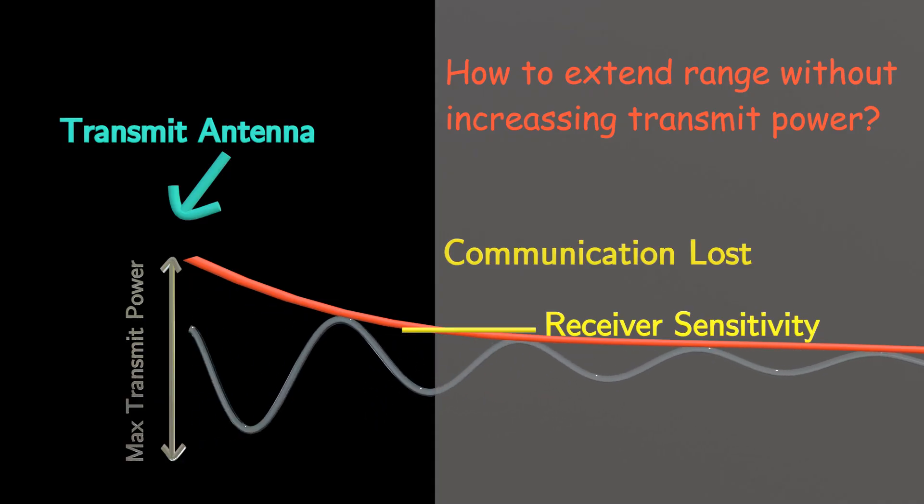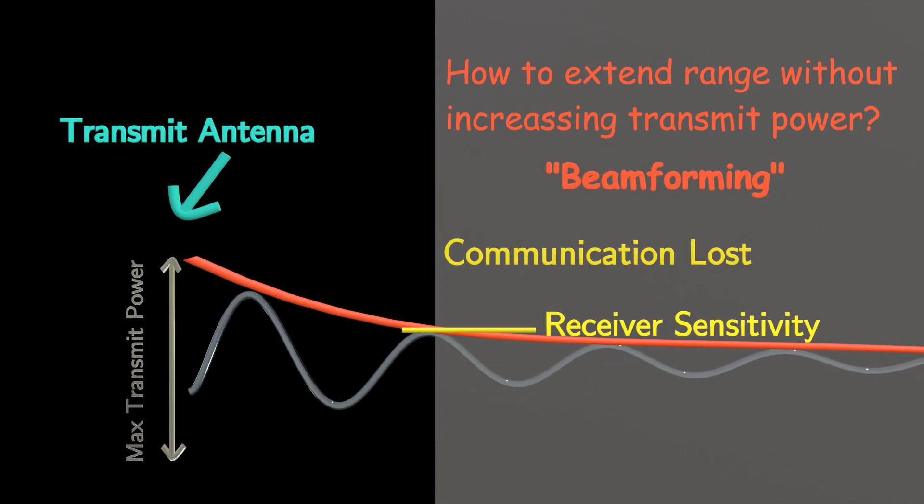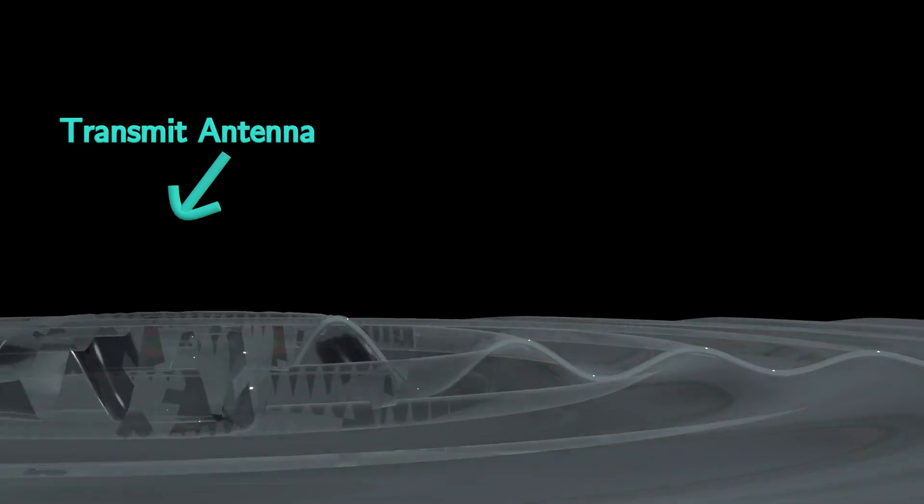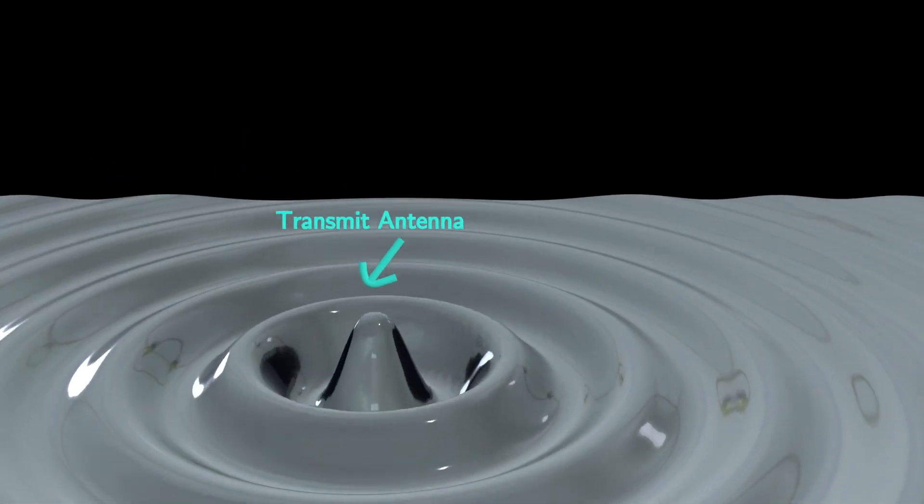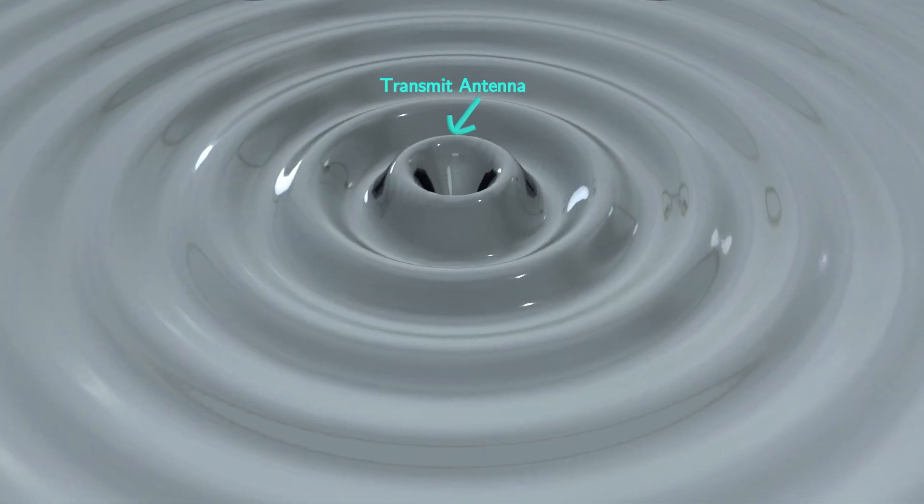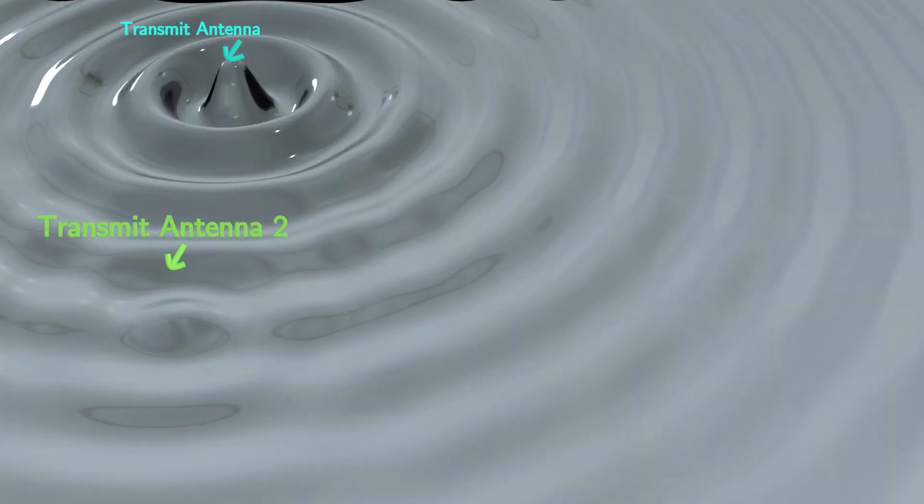The answer is beamforming. In beamforming, instead of using a single transmit antenna, we use multiple transmit antennas and distribute the available transmit power between these antennas.